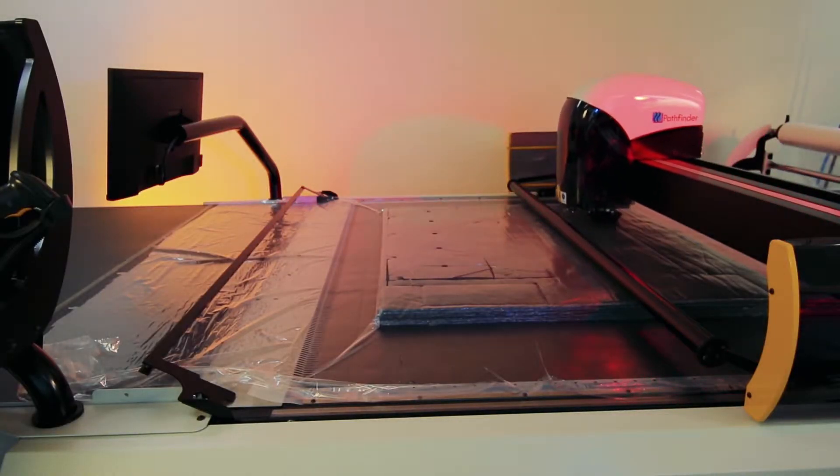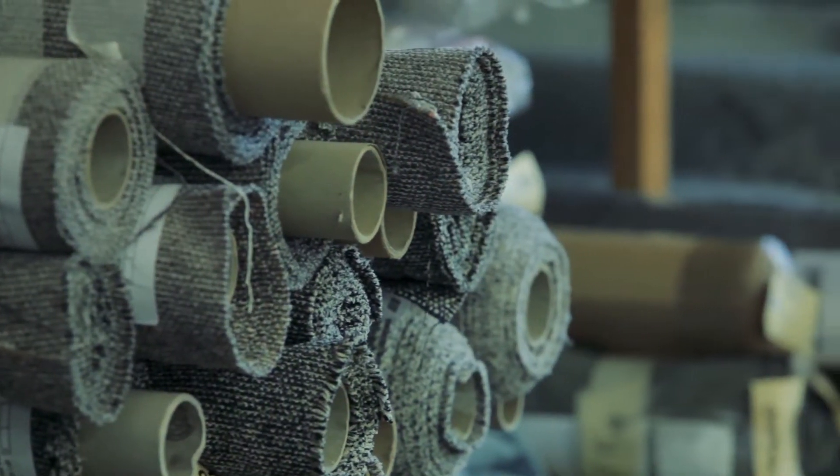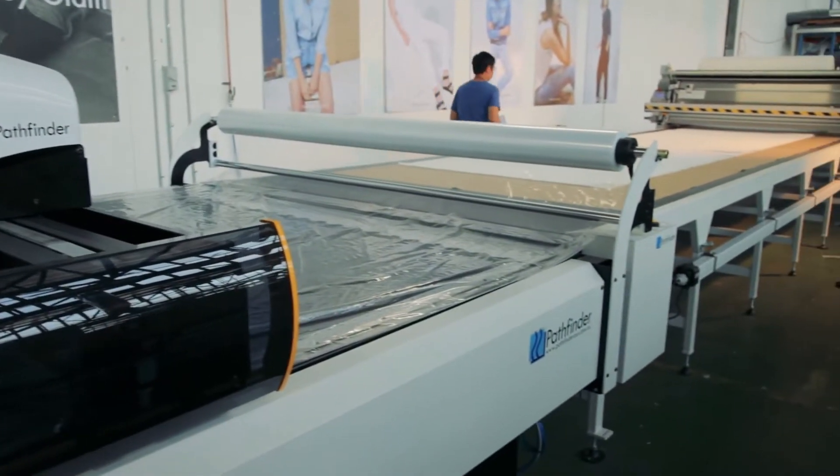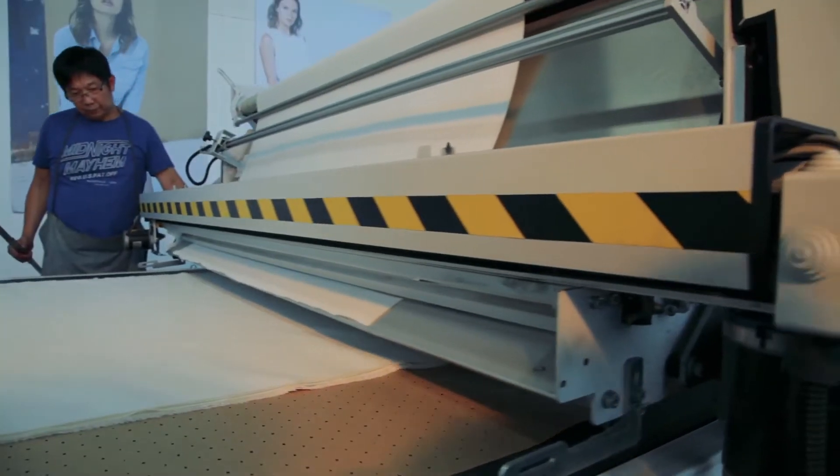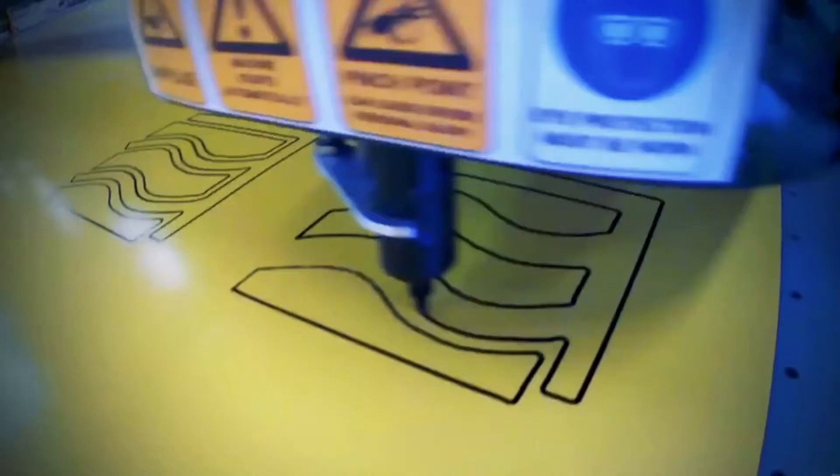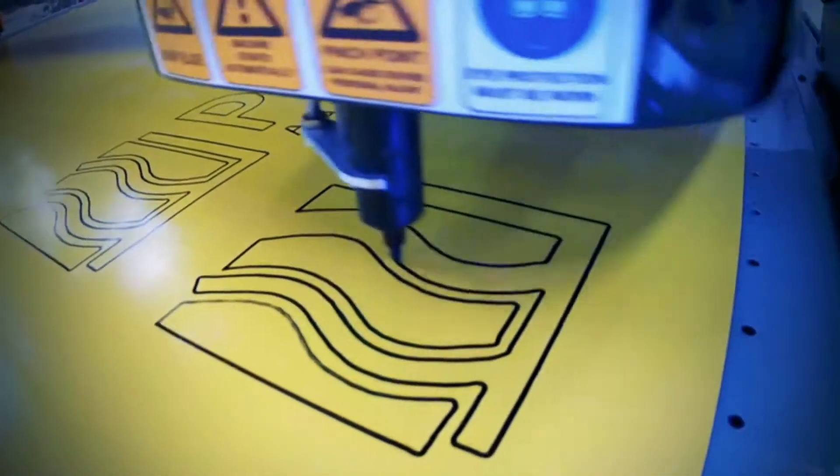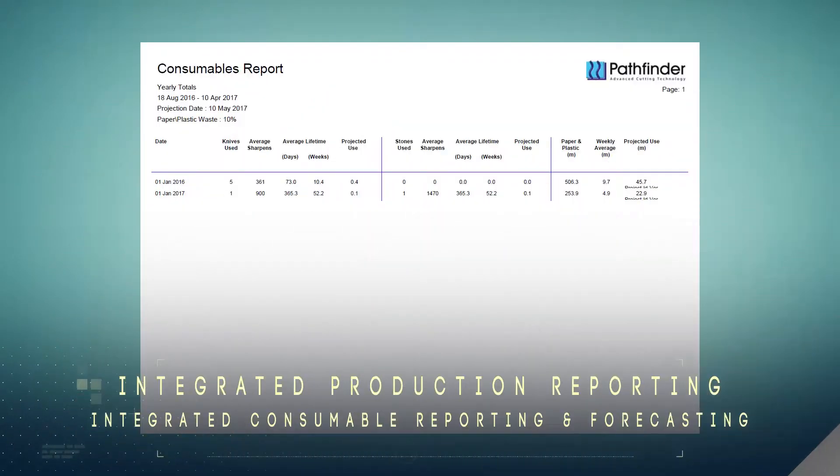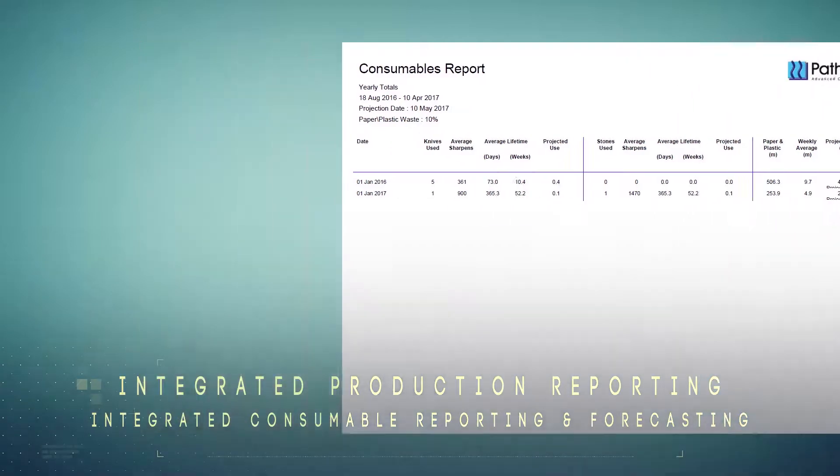To ensure that the Pathfinder M-Series is suited to any fabric type or task, there are a host of optional add-ons, upgrades and features, all designed to accelerate your productivity. The add-ons include various piece identification marking methods and production management features including integrated production reporting and integrated consumable reporting and forecasting.